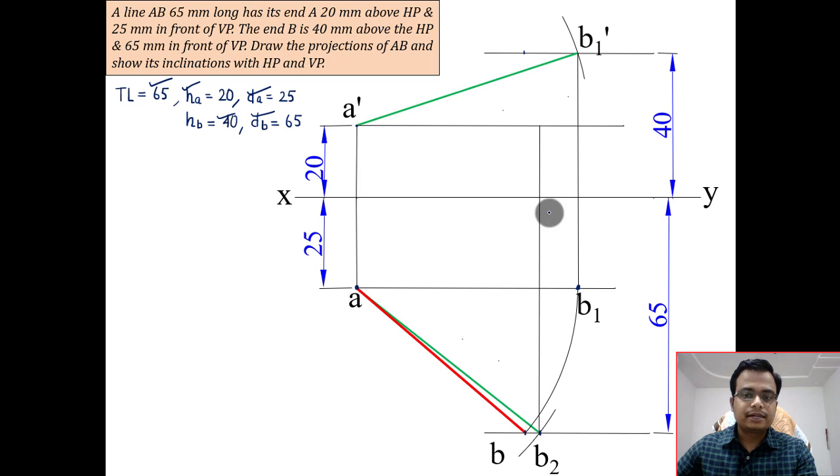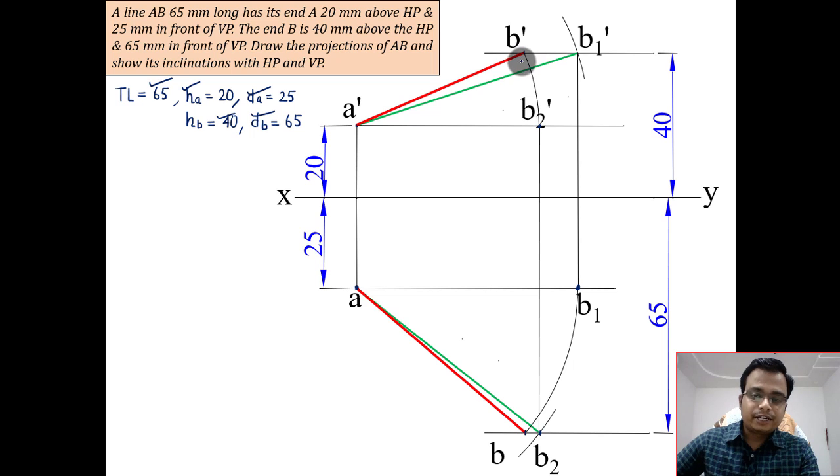There is one more way by which you can do so. Going straight up, then A dash as center and with A dash B2 dash as the radius, rotate this in the anticlockwise sense. That's going to be point B dash.